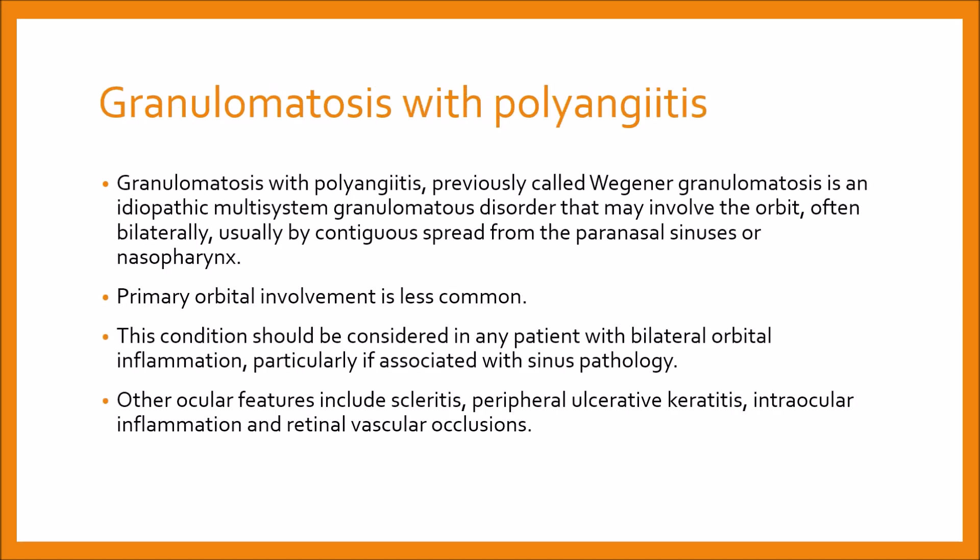Granulomatosis with polyangiitis, previously called Wegener's granulomatosis, is also an idiopathic multi-system granulomatous disorder that may involve the orbit, often bilaterally, usually by contiguous spread from the paranasal sinuses or nasopharynx. Primary orbital involvement is less common. This condition should be considered in any patient with bilateral orbital inflammation, particularly if associated with sinus pathology. Anti-neutrophilic cytoplasmic antibody (ANCA) is a useful serological test.